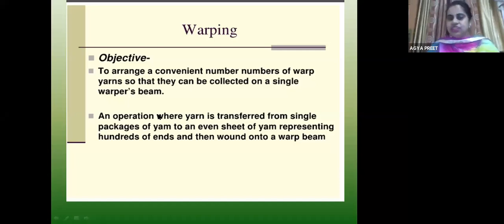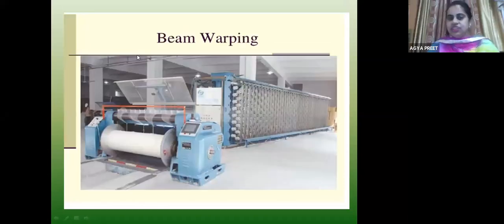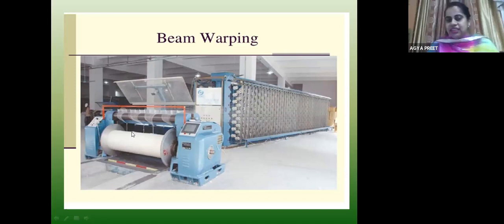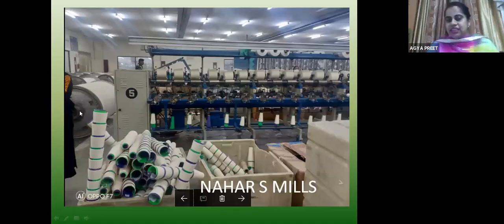Warping is of two types. One is section warping. Mostly when we make a plain fabric, we go for direct warping — you can see how many packages are placed and a big beam is made. There are hundreds of warp ends that can be put on the loom. This photograph shows direct warping being done, and you can see students visited there and a big beam form is visible.